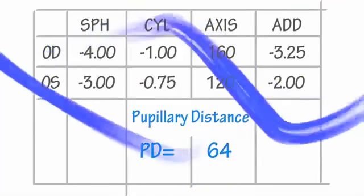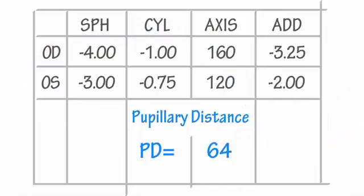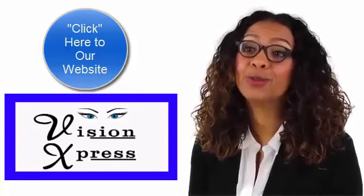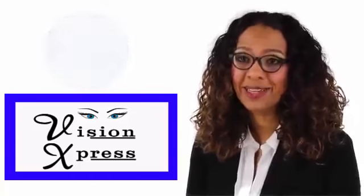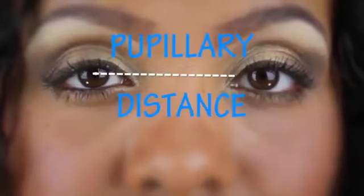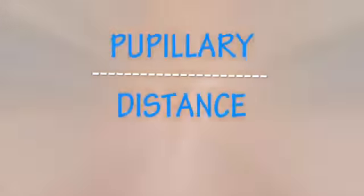And finally we have PD, which means pupillary distance — pretty straightforward. PD simply means the distance between one pupil and the other. If you're panicking because you don't have PD written on your prescription, don't worry — please click here to check our tutorial on how to measure the distance yourself.